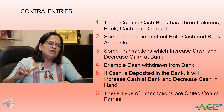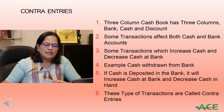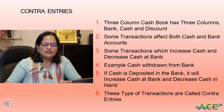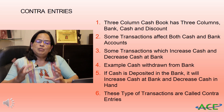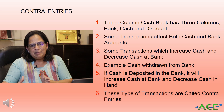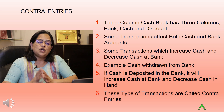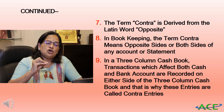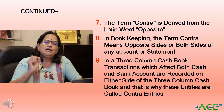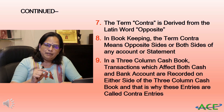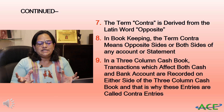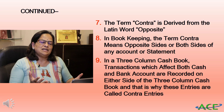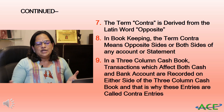If cash is deposited in the bank, cash at bank will increase while cash in hand will decrease. Transactions which affect both cash balance and bank balance are called contra entries. The term 'contra' is derived from the Latin word meaning 'opposite.' In bookkeeping, contra means opposite sides or both sides of the same statement or account. In the triple column cash book, both debit and credit columns have amount columns divided into cash, bank, and discount.